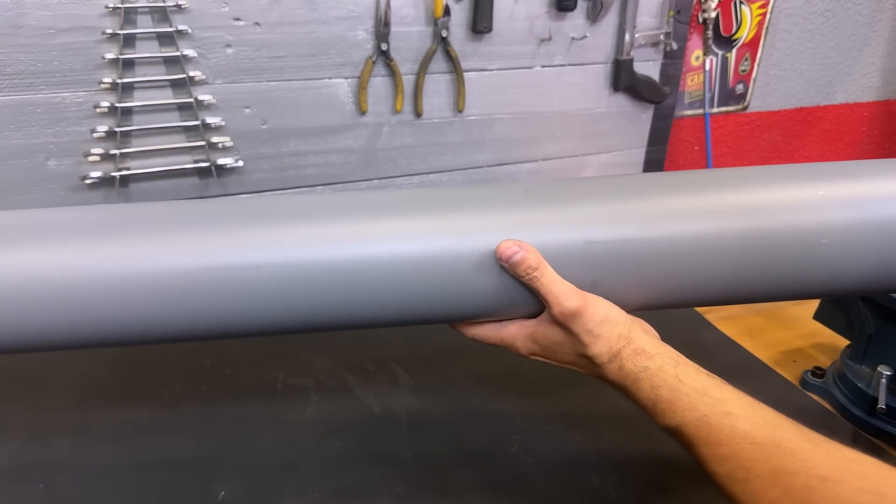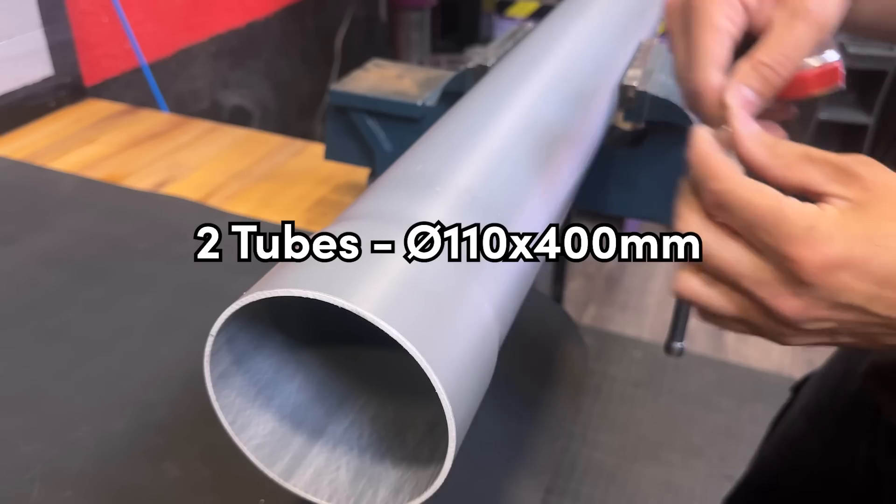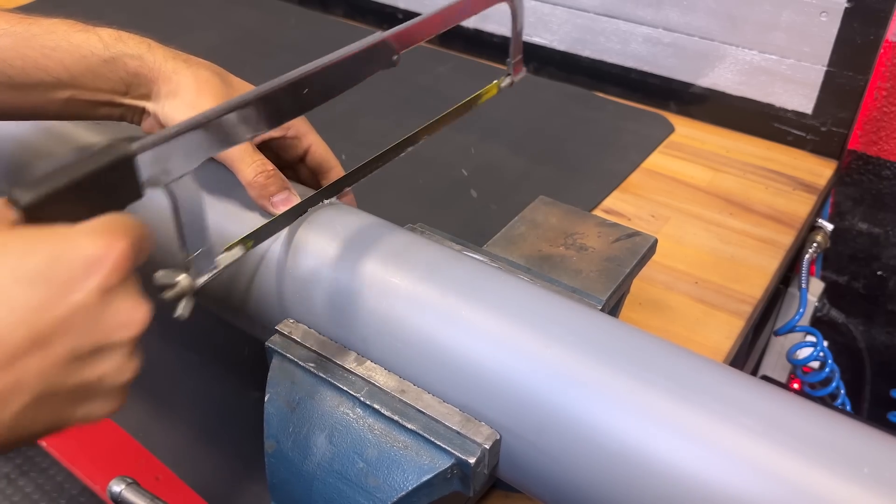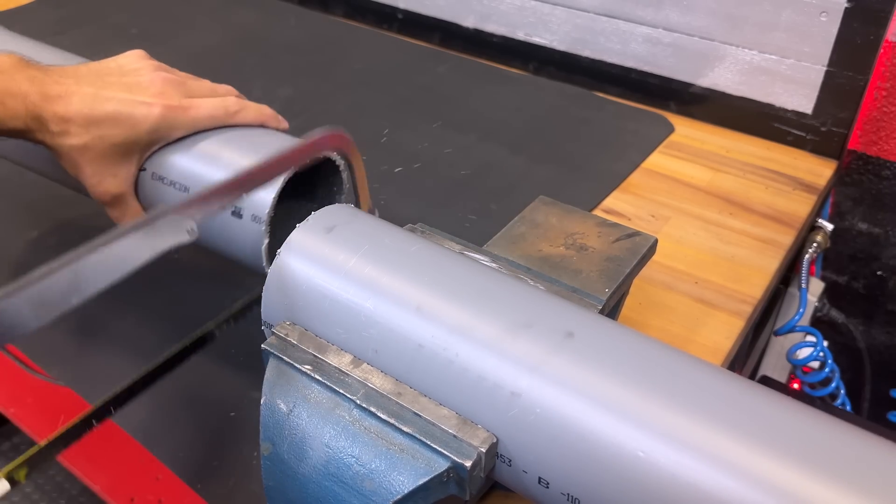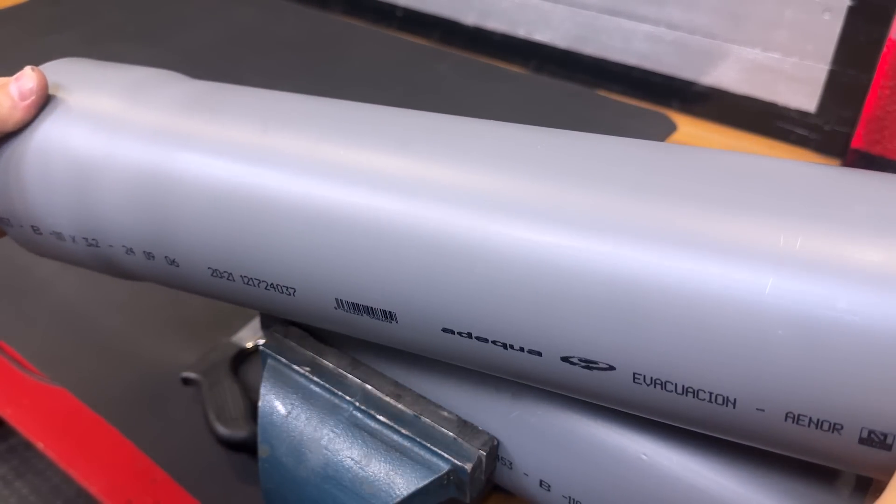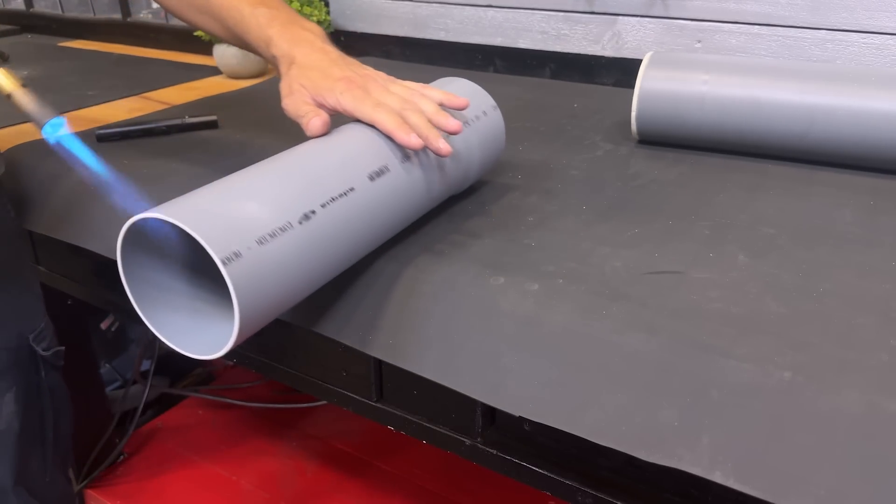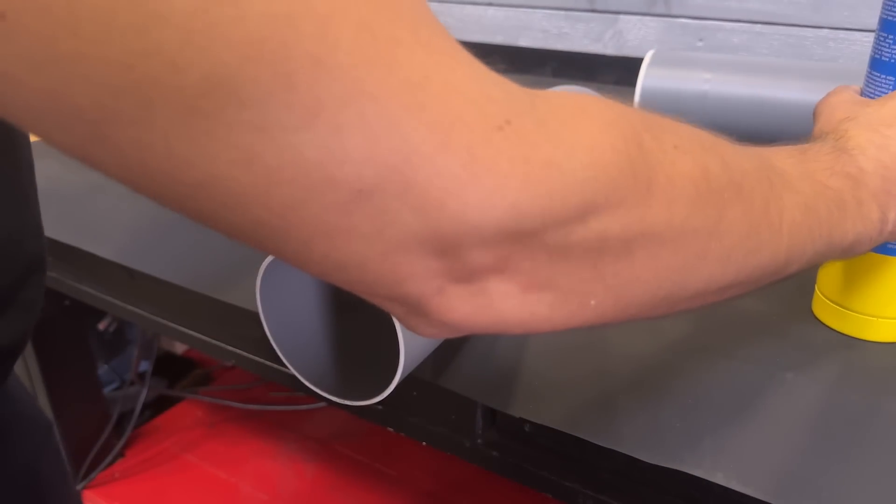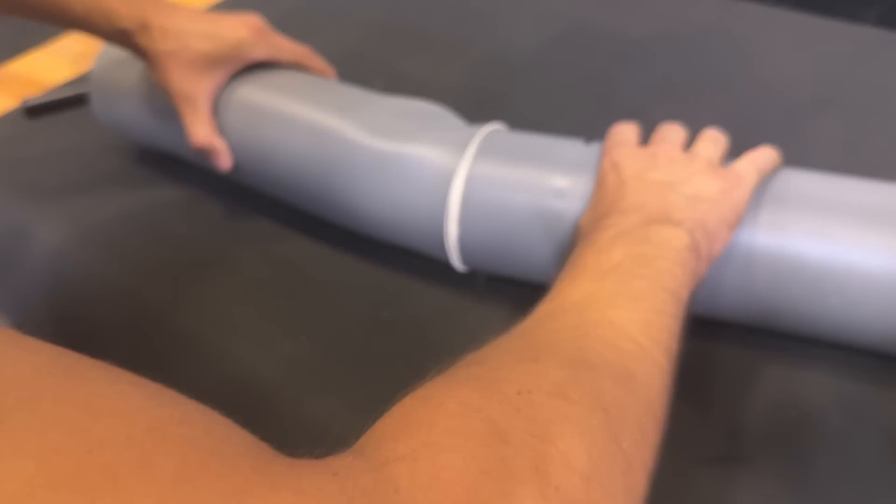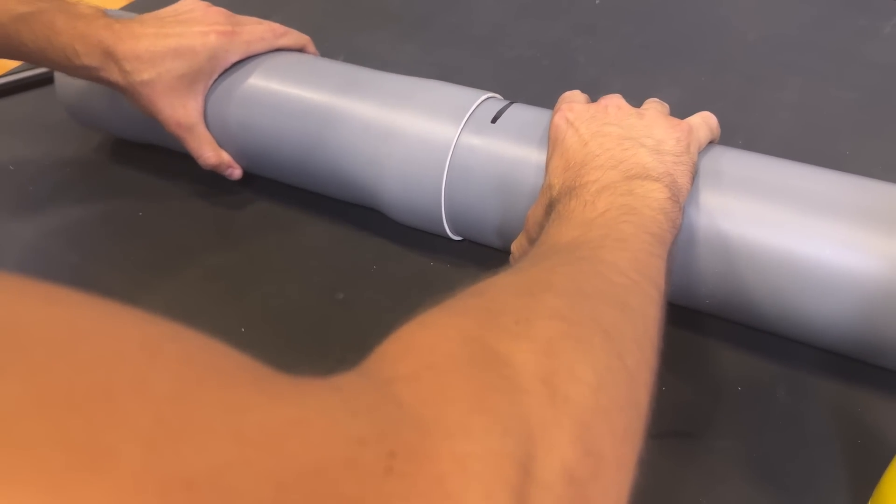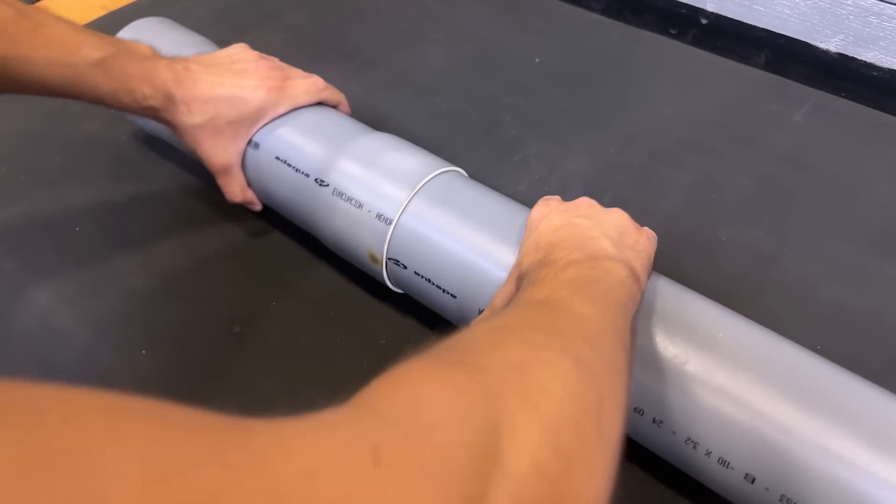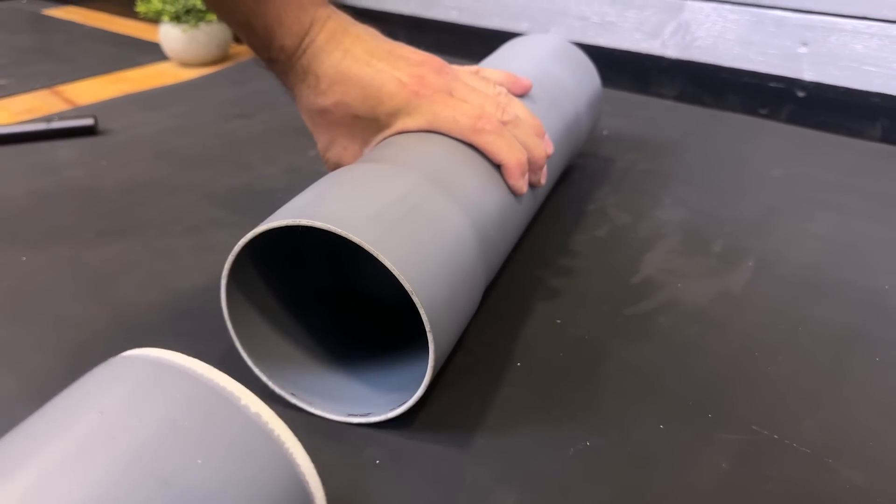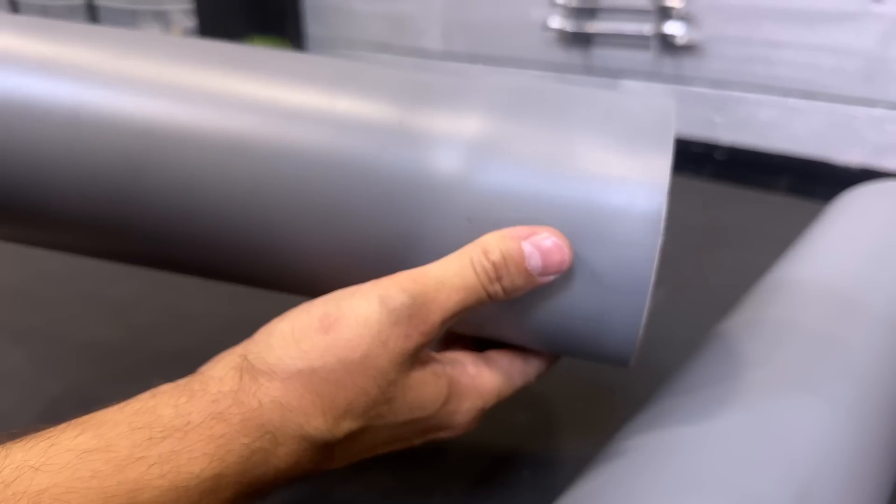We start by cutting two PVC pipes with a diameter of 110 for 400 millimeters. We must heat the ends with a blowtorch to expand them. We insert one pipe inside the other so that it expands to the correct size. This way we can put these caps on the ends.